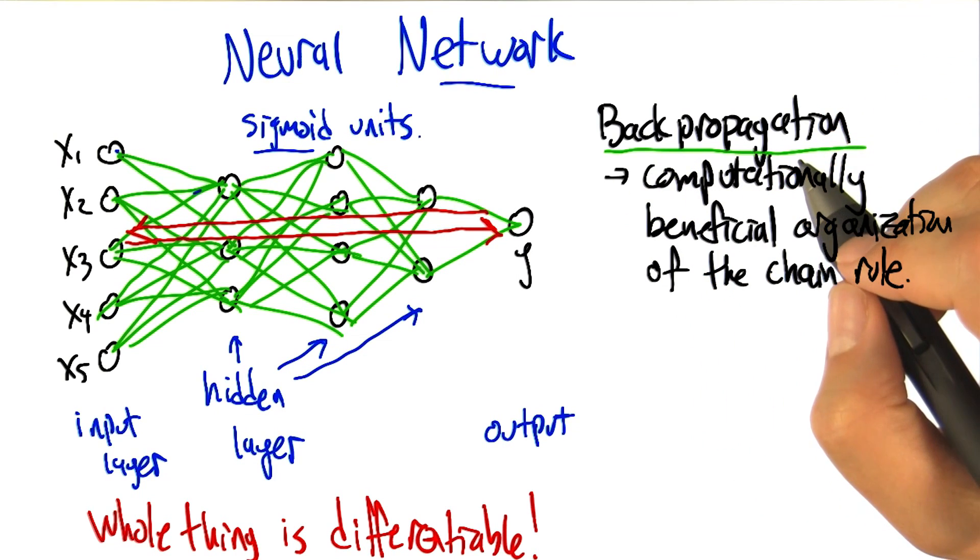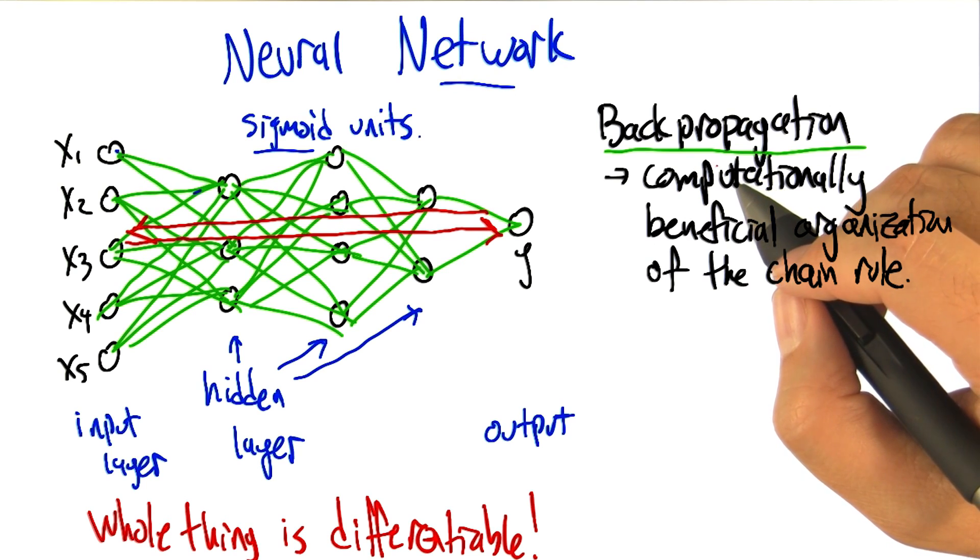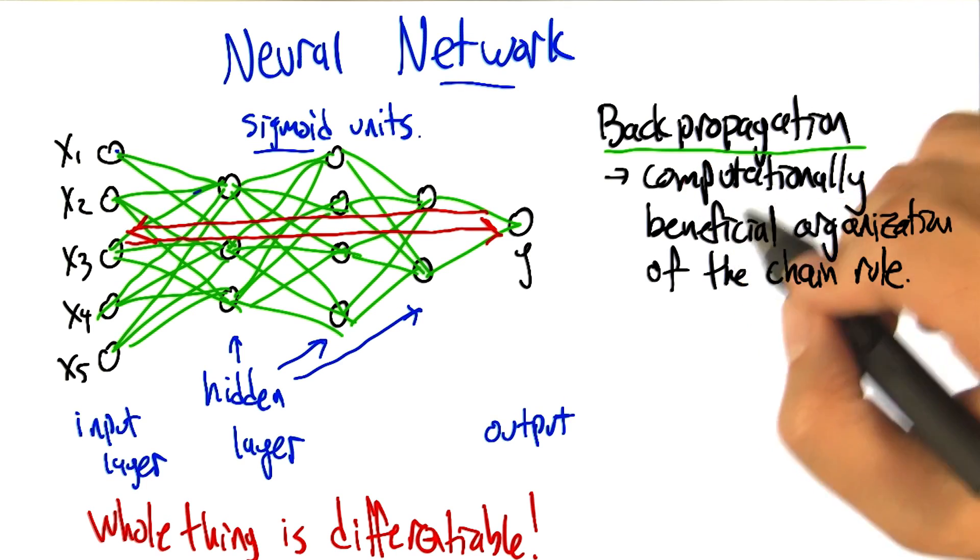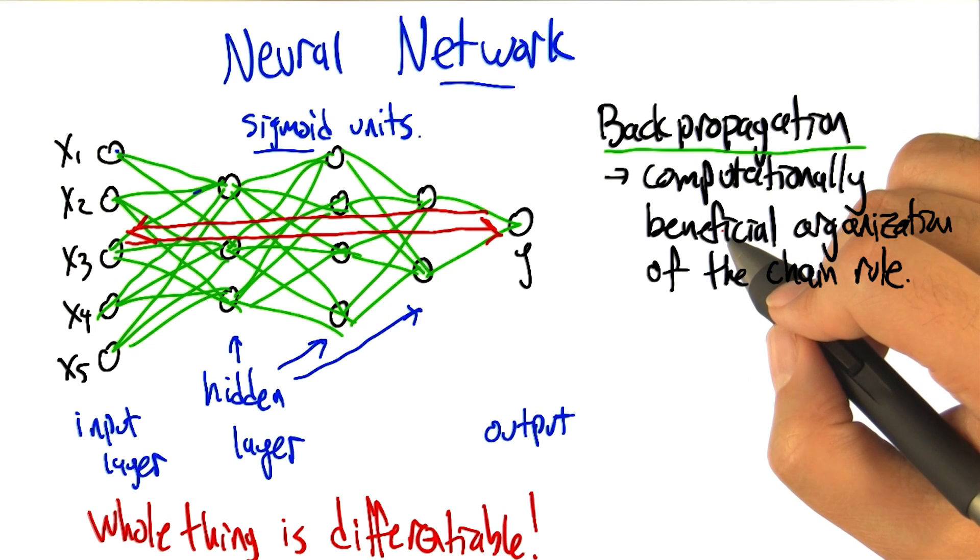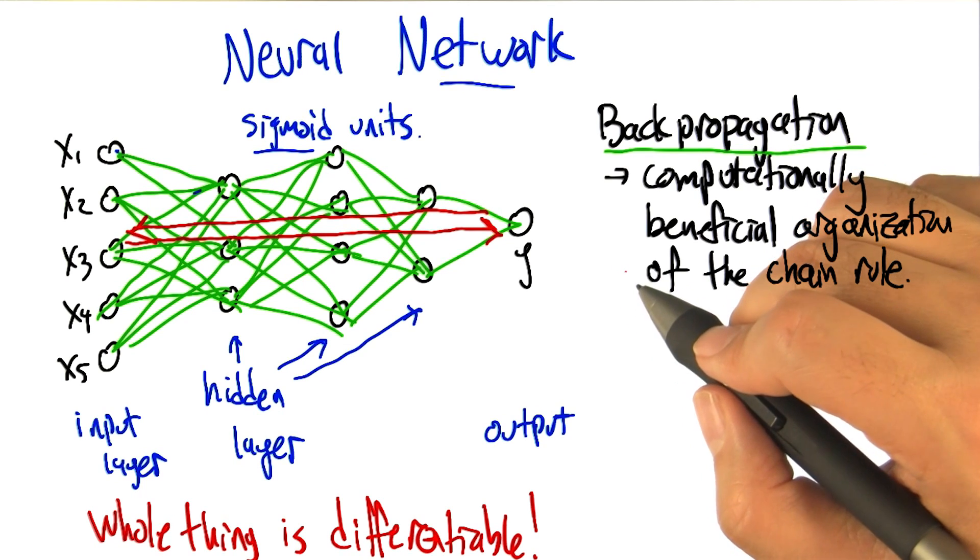Nice. So here's a question for you Michael. What happens if I replace the sigmoid units with some other function? And let's say that function is also differentiable. Well, if it's differentiable then we can still do this basic kind of trick that says we can compute derivatives and therefore we can move weights around to try to get the network to produce what we want it to produce. That's a big win.